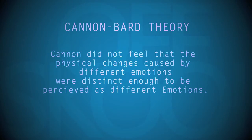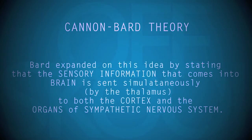Cannon did not feel that the physical changes caused by different emotions were distinct enough to be perceived as different emotions. Bard expanded on this idea by stating that sensory information that comes into the brain is sent simultaneously by the thalamus to both the cortex and the organs of the sympathetic nervous system.